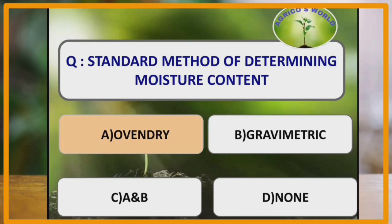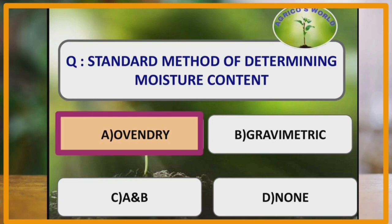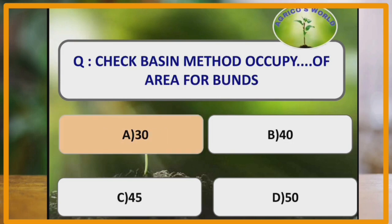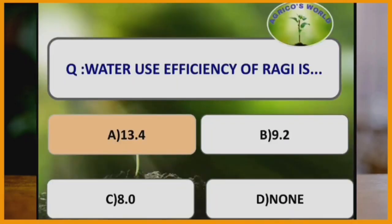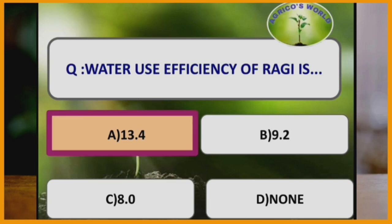Oven dry method is the standard method of determining the moisture content. Check basin method occupies 30% area for bunts. The water use efficiency of ragi is 13.4%, whereas in rice it is 3.4%. Water use efficiency is highest in ragi and lowest in rice.